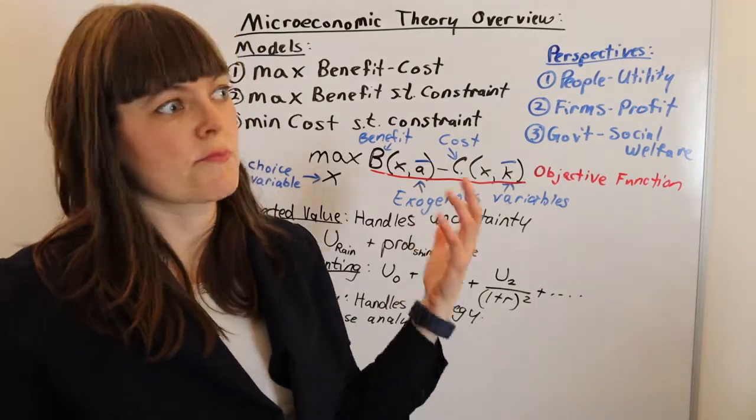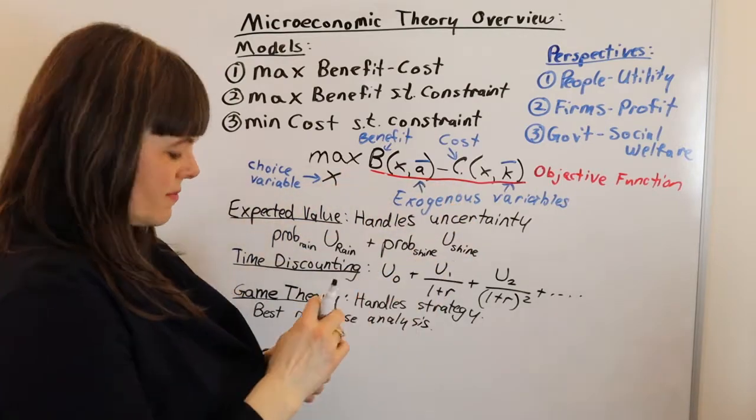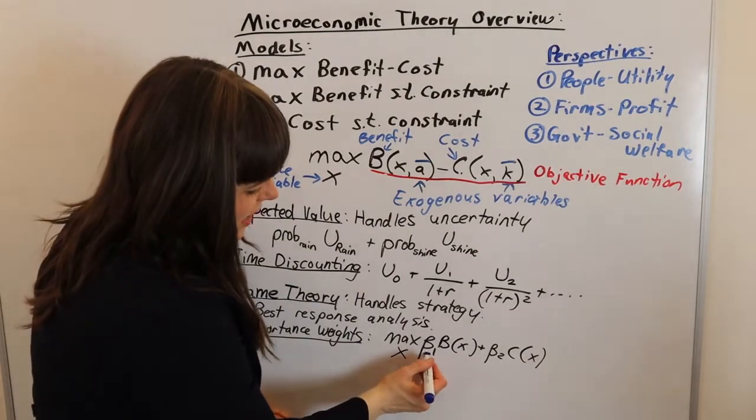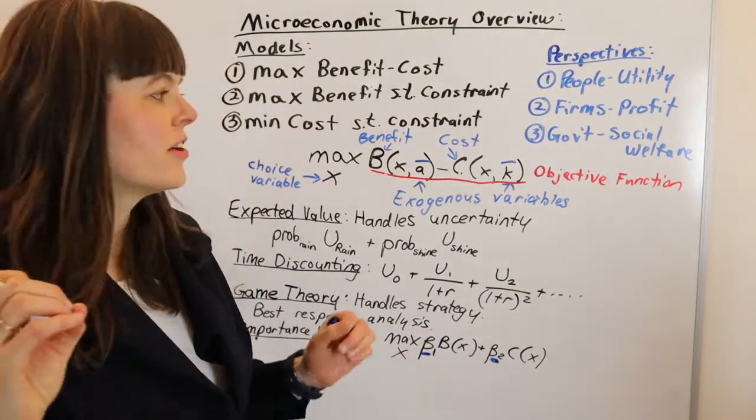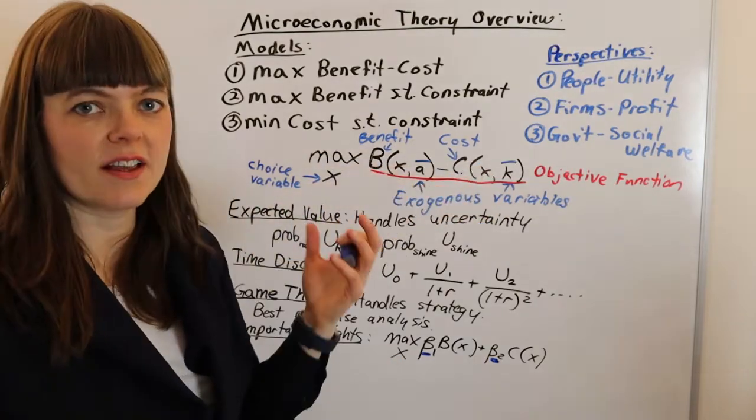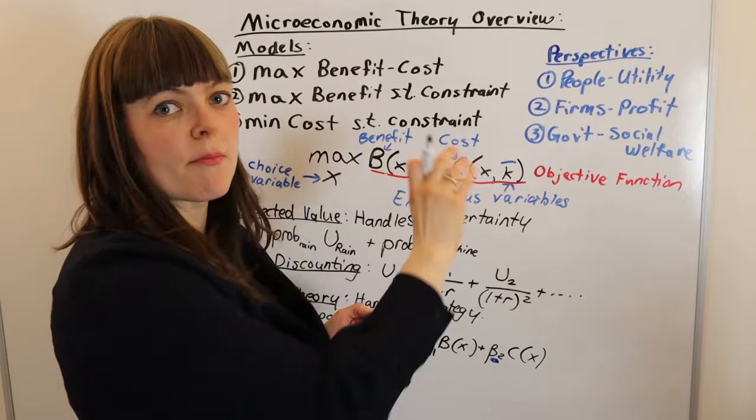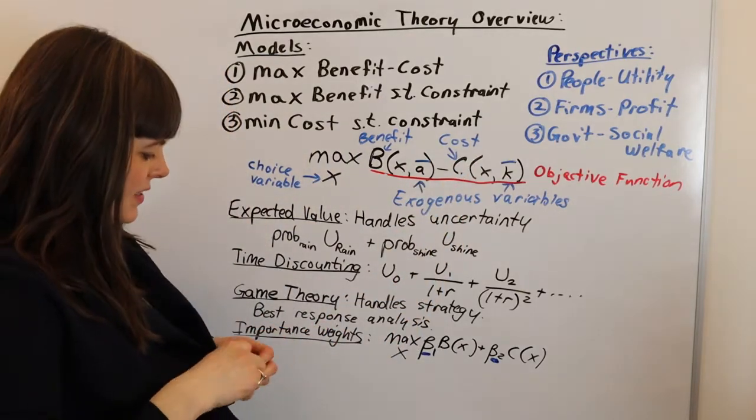One more thing we might want to add is importance weights. We might want to weigh our cost and benefit differently. We can add importance weights as coefficients on any part of our model to make certain parts more salient or more important according to the person whose perspective the model is from.